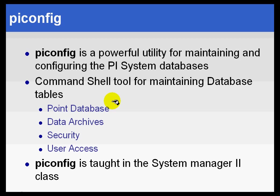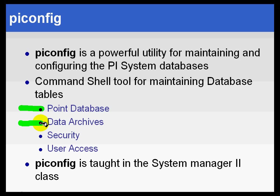PI Config is something we do not teach in this class. It is a utility for maintaining the PI System databases — kind of like a list processor. At the DOS prompt, you use simple ASCII text files with PI Config syntax to do list processing, so you can modify the point database, data archive, security, access, etc. We have exposed a great deal of the inner workings of the system through PI Config. It is part of our System Manager 2 class.